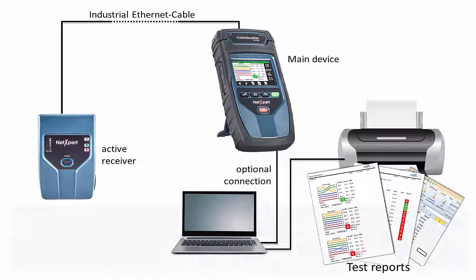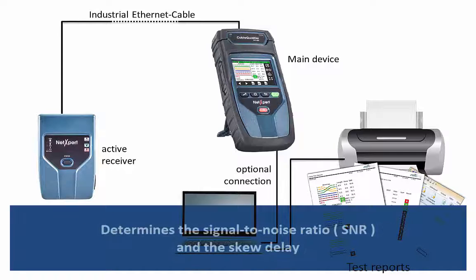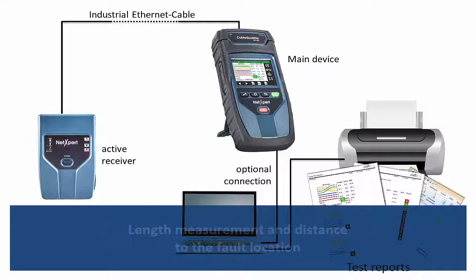With the use of real data, the NetExpert 1400 performs fault rate tests in order to define whether 100 Megabit or 1 Gigabit can be transmitted without faults. In addition, parameters will be shown which have an effect on signal quality — these are the signal-to-noise ratio and the delay skew. A TDR measurement will determine pair lengths and the distance to faults.